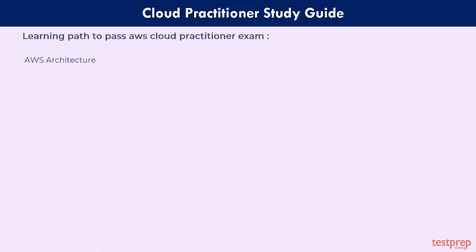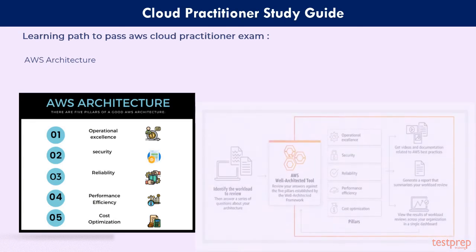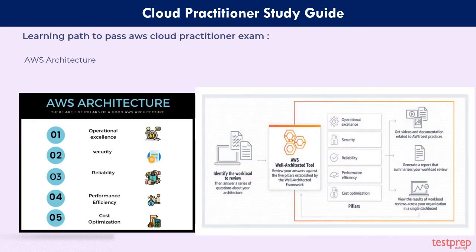Fourth, AWS Architecture. There are five pillars of a good architecture: Operational Excellence, Security, Reliability, Performance Efficiency, and Cost Optimization. It is important to know the practice of implementing the well-architected framework in AWS.